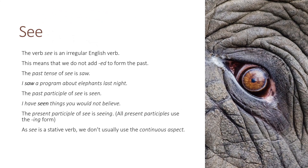The verb see is an irregular English verb. This means that we do not add –ed to form the past. The past tense of see is saw: 'I saw a program about elephants last night.' The past participle of see is seen: 'I have seen things you wouldn't believe.' The present participle of see is seeing — all present participles use the -ing form. As see is a stative verb, we do not usually use the continuous aspect.